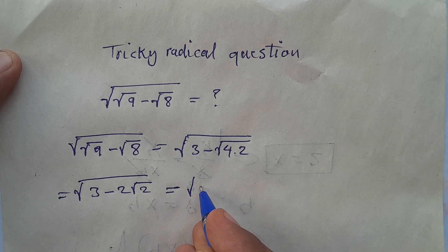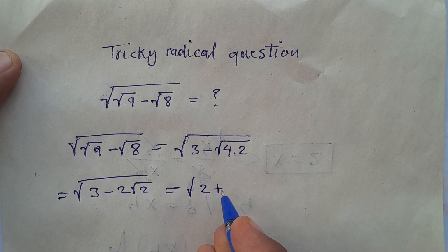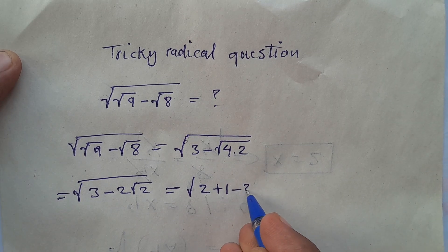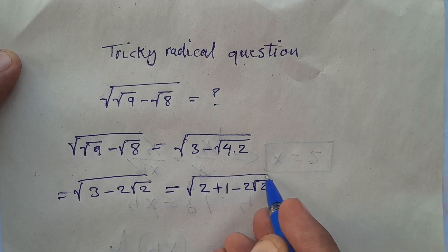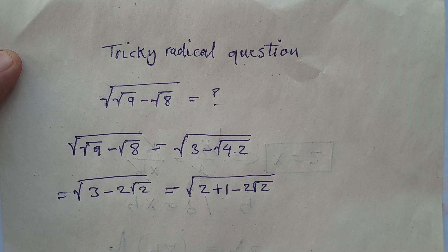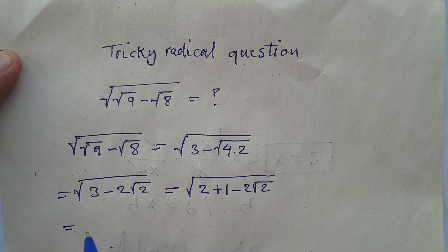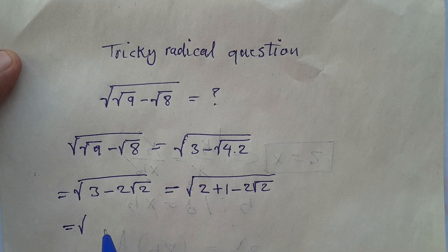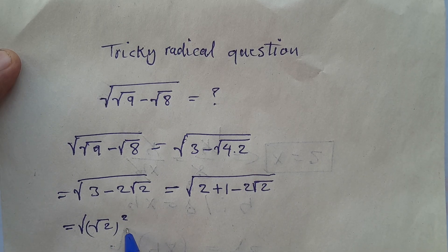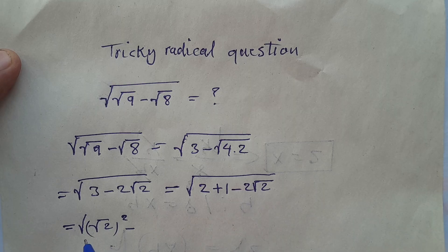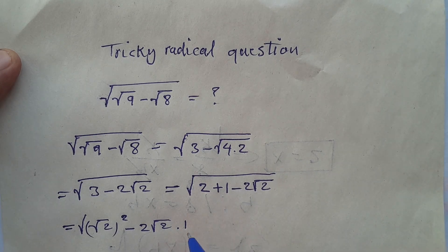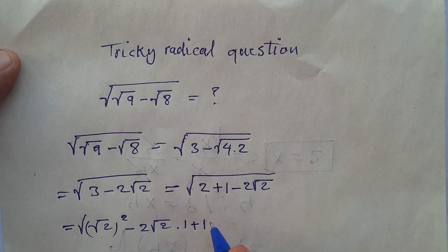Now 3 can be written as 2 plus 1, minus 2 square root of 2. This can be written as square root of 2 squared, minus 2 times square root of 2 times 1, plus 1 squared.